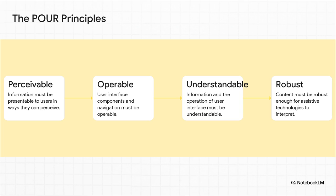First up, P is for Perceivable. Can everyone see or hear your content? This is where things like alt text on an image are absolutely critical for someone using a screen reader, or captions on a video are a must for someone who is deaf.